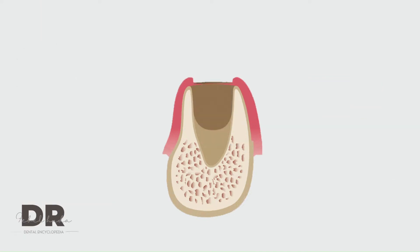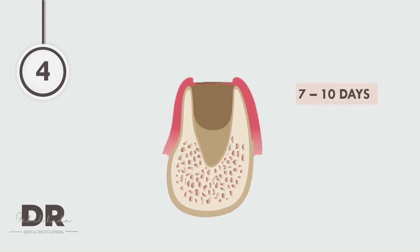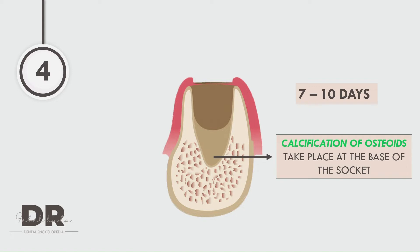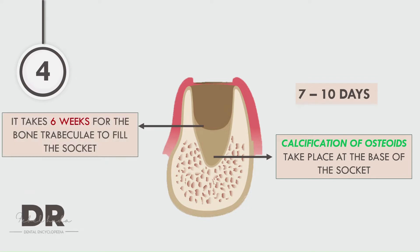This moves on to the fourth stage, which is actually the conversion of connective tissue to bone — ossification. This starts in the first week itself, beginning from the base of the socket and the sides of the socket. It starts to completely fill the entire socket only after six weeks.